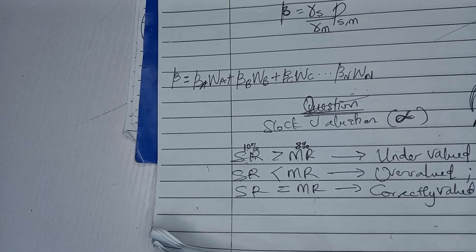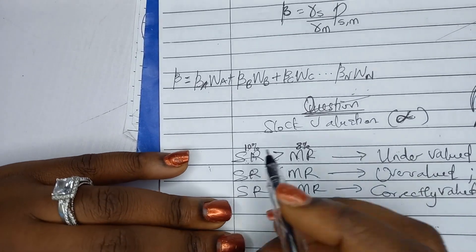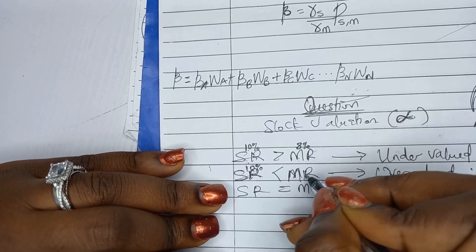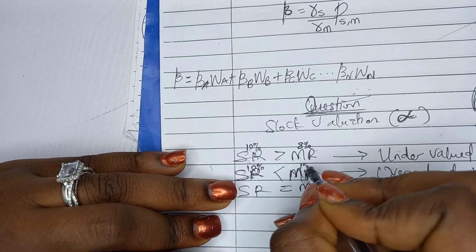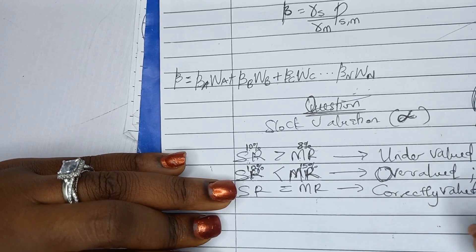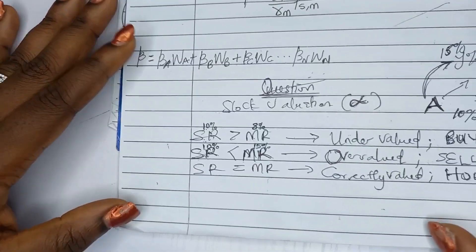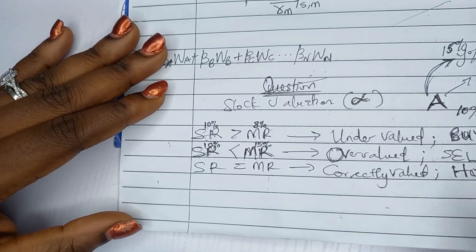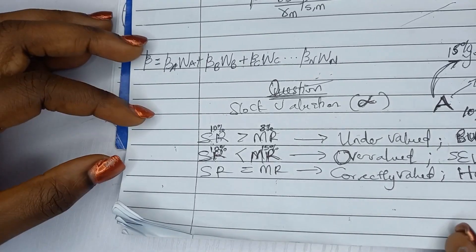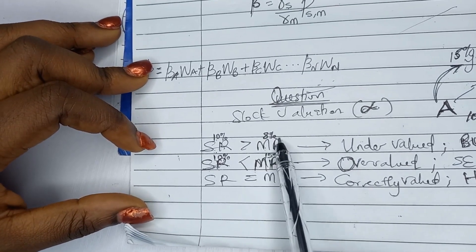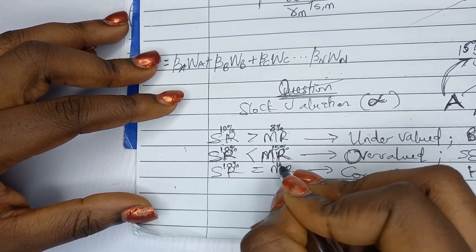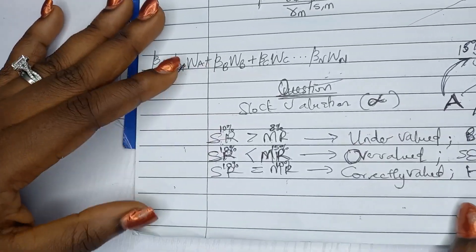If the stock return is less than the market return — say actual return is 10% and the market predicted 15% — the market has overvalued the stock and you sell it off. There's no point holding a stock the market says should pay 15% but it's only paying 10%. If the stock return equals the market return, it is correctly valued, so you just hold.